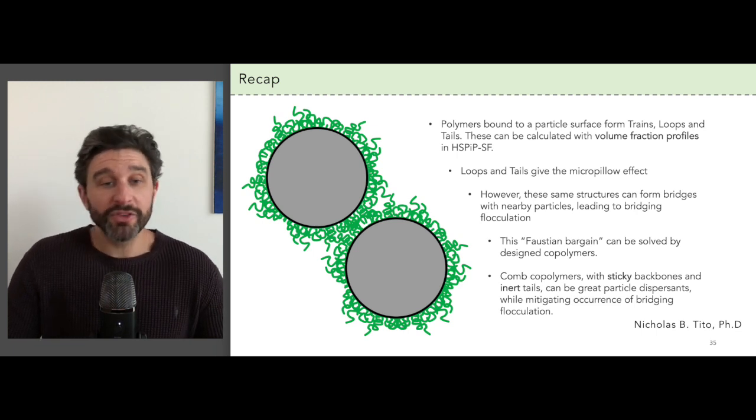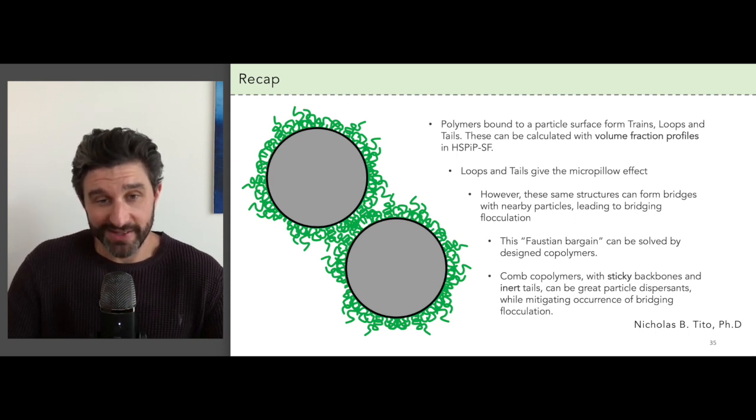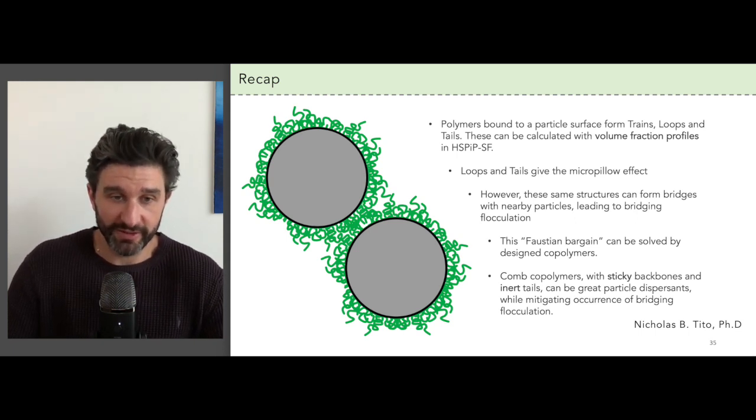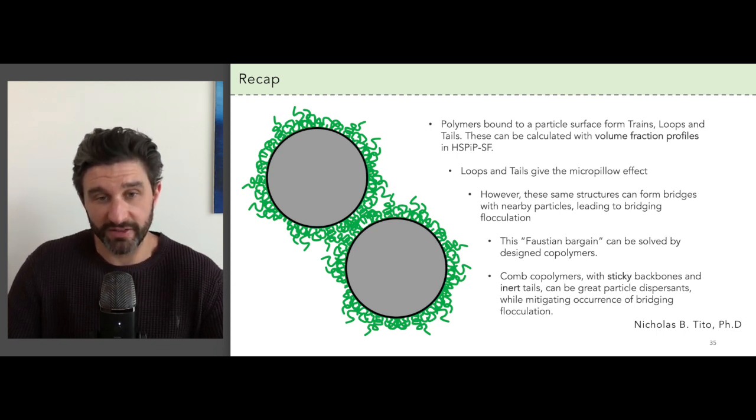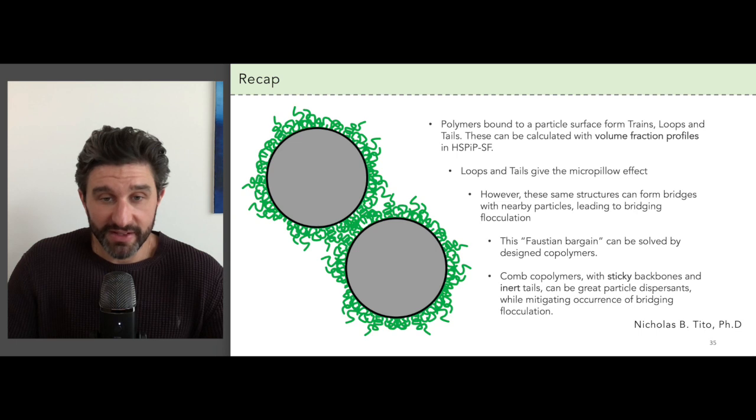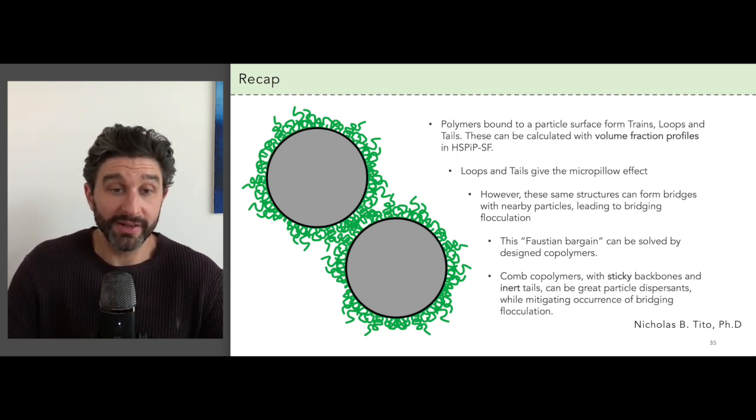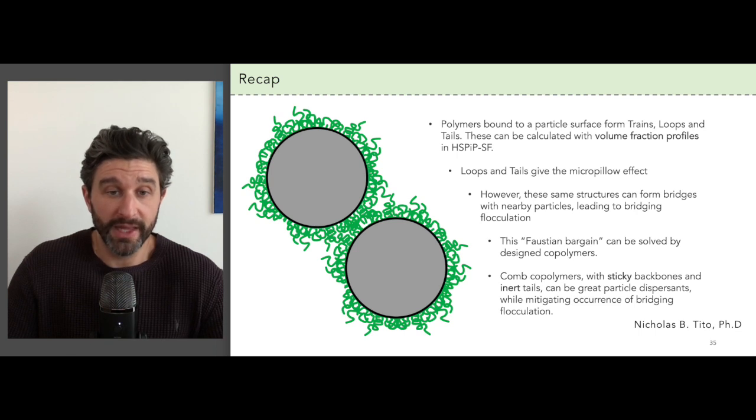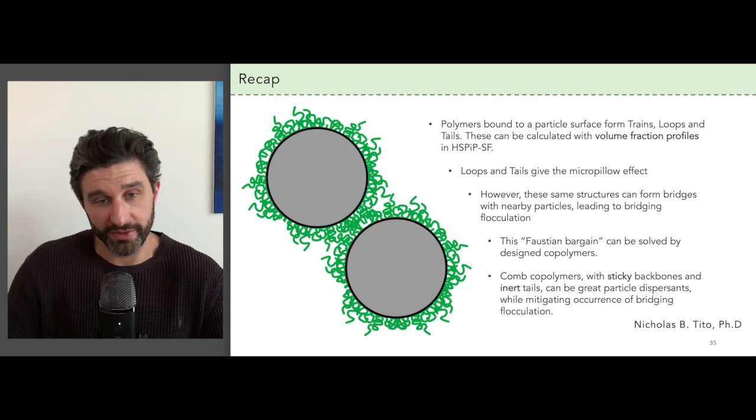However, these same structures can also form bridge interactions between particles. This is the Faustian bargain of homopolymers as dispersants, and we can make a better bargain by using copolymer architectures instead. To dive into this, we looked at how to prototype a comb polymer with a sticky backbone and inert side chains. It provides good dispersion features and reduces chances of bridging interactions between particles.